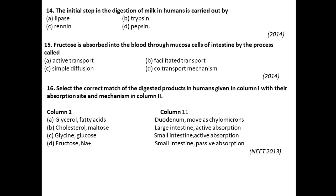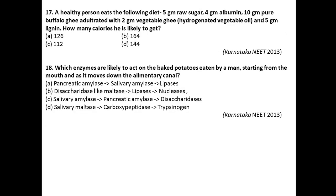Question number sixteen: Select the correct match of digested products in humans given in column 1 with absorption site and mechanism in column 2. Glycerol and fatty acids — duodenum as chylomicrons. Cholesterol and maltose — large intestine, active absorption. Glycine and glucose — small intestine, active absorption. Fructose and sodium — small intestine, passive absorption. Here option C is the right answer.